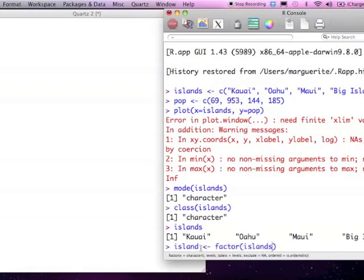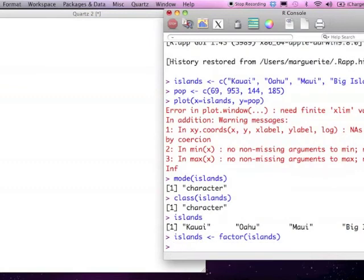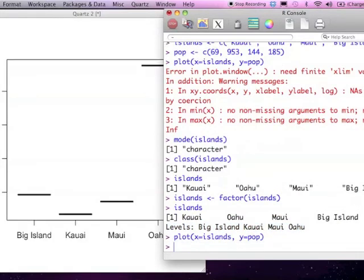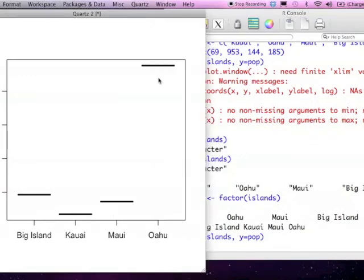Make sure you spell it correctly. And so now when we look at islands, you see there's an extra thing here, which is the levels of the factors. So let's try to plot it again. And voila, we have actually a plot.